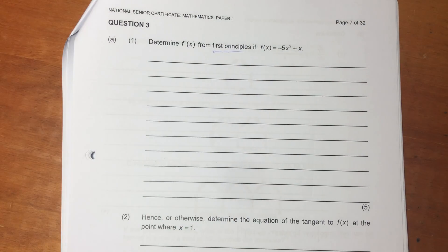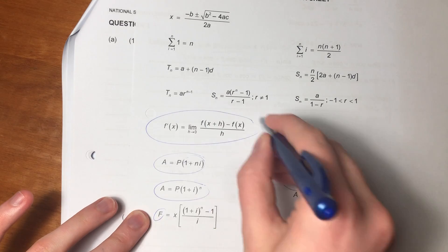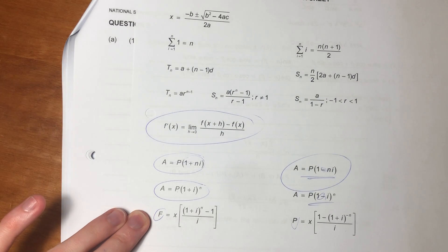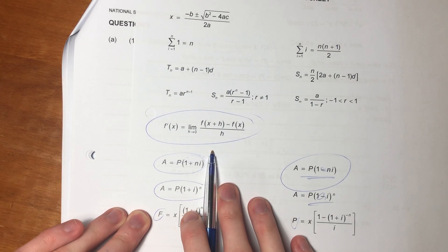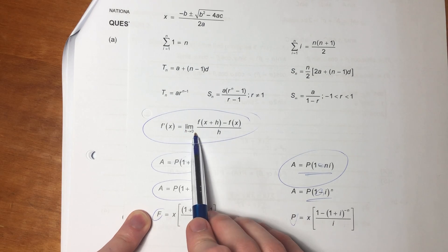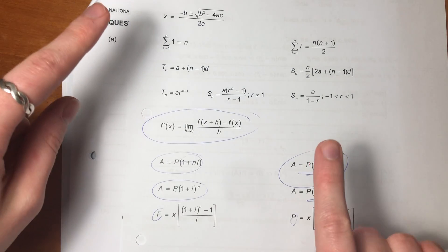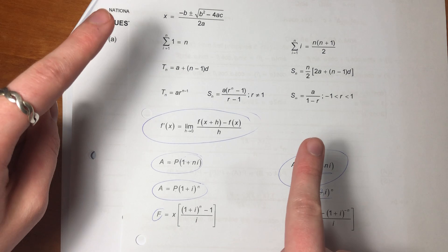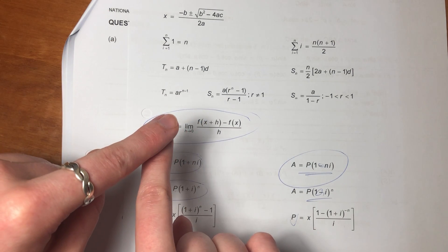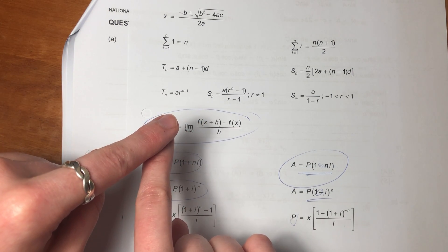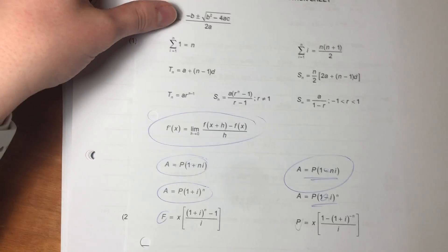They're testing whether you understand how to use this formula here. This is the first principle formula. It's basically saying, as h tends to zero — if I have a graph and it's saying we have two points, as the distance between those two points almost coincides, what is the derivative? That's what the formula is saying.